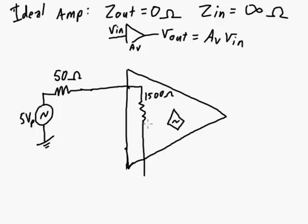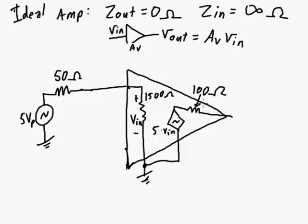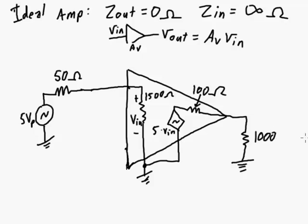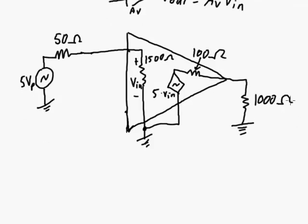It has a voltage gain of 5, so 5 times V in, where V in is applied across here. So connect that to our reference. And then it has an output impedance of 100 ohms connected to a load of 1000 ohms.